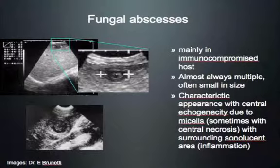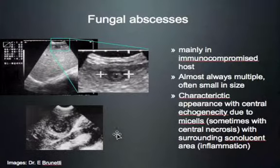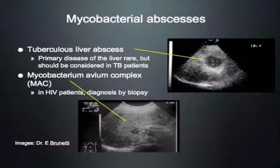A few other less common causes: fungal abscesses often have a characteristic wheel-in-wheel appearance — a hypoechoic ring surrounding an echogenic ring, with a central necrotic hypoechoic area. They occur mainly in immunocompromised hosts, are often multiple and small. Think of this in HIV patients and neutropenic patients. TB can also cause liver abscesses, and Mycobacterium avium in HIV patients causes smaller, less necrotic abscesses — discussed more in a later lecture.